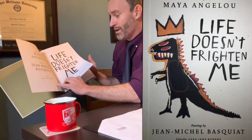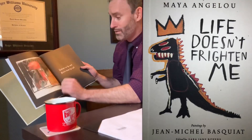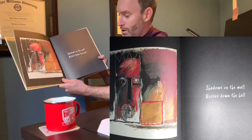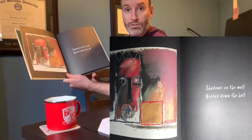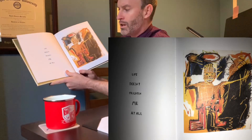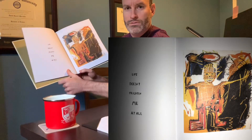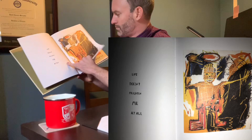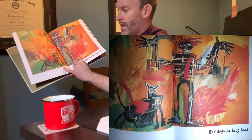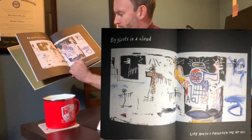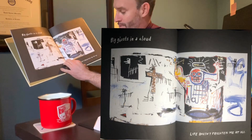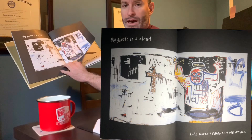Life Doesn't Frighten Me — that's the title of the book. Shadows on the wall. Noises down the hall. Life Doesn't Frighten Me at all. Bad Dogs Barking Loud, Big Ghosts in a Cloud, Life Doesn't Frighten Me at all.